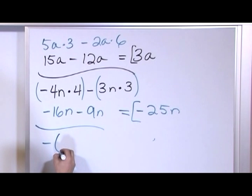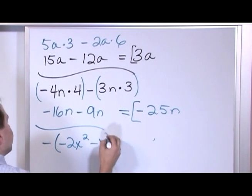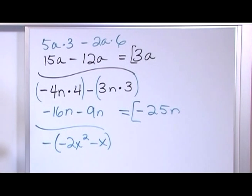Now, let's say I have negative, open parentheses, negative 2x squared minus x. And I want to do that. Now, inside of the parentheses, which usually is what you do first, you have an x squared and you have an x, and they're added, or in this case, they're subtracted.